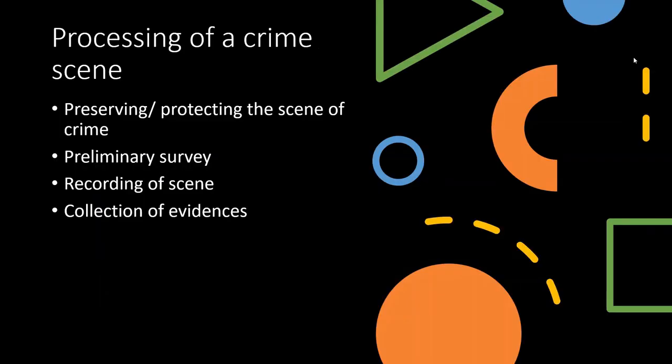Now we will discuss the processing of a crime scene. The first step is preserving or protecting the scene of crime. On a priority basis, this includes victim assistance, followed by barricading the crime scene. Since people often gather out of curiosity and may disturb the evidence, the scene should be barricaded using do-not-cross tapes, red plastic cones, or police officials if those resources are unavailable.